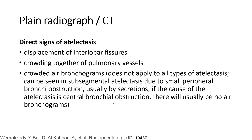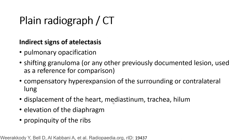In plain radiograph and CT, in order to assess for lung atelectasis, we have to find some signs. Direct signs of atelectasis include: displacement of interlobar fissures, crowding together of pulmonary vessels, and crowded air bronchograms. Indirect signs of atelectasis include: pulmonary opacification, shifting of mediastinum, compensatory hyperexpansion of the surrounding or contralateral lung, displacement of the heart, mediastinal and tracheal shift, elevation of the diaphragm, and approximation of the ribs.